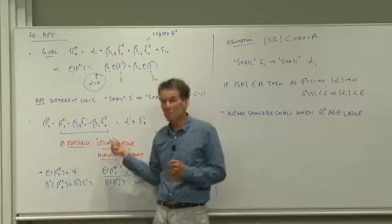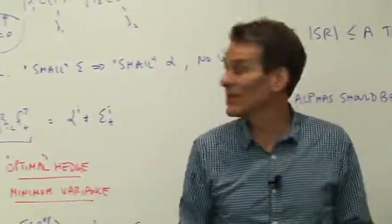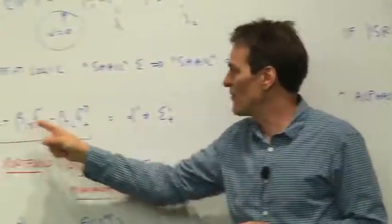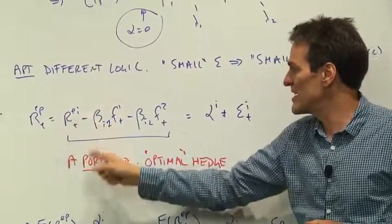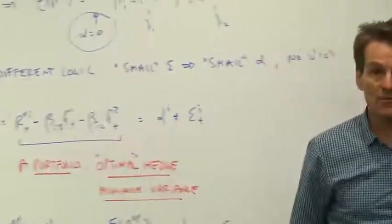Well, the factors are traded, so you're perfectly well allowed to do that. The same symbols now mean something completely different. Here they meant regression coefficients. Here you're going to form a portfolio along your test asset and short the factor portfolios using the regression coefficients as weights.